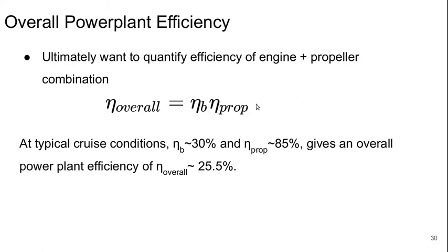The second metric we'll briefly discuss today is the overall power plant efficiency. This is just the efficiency of the engine times the efficiency of the propeller to give us our overall system efficiency. To give you an idea of reasonable numbers at a typical cruise condition: the engine efficiency might be about 30%, and the propulsive efficiency is probably in the vicinity of 85%. This gives us an overall efficiency in the vicinity of about 25%, and that's about as good as we can expect from a typical spark ignition engine system.